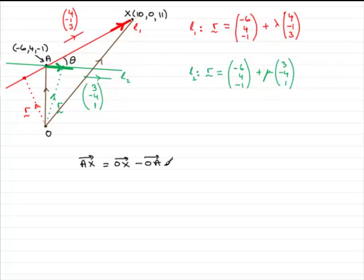If you're unsure of that I'll show you just at the end how that works. But for the moment, o to x is going to be the vector 10, 0, 11.